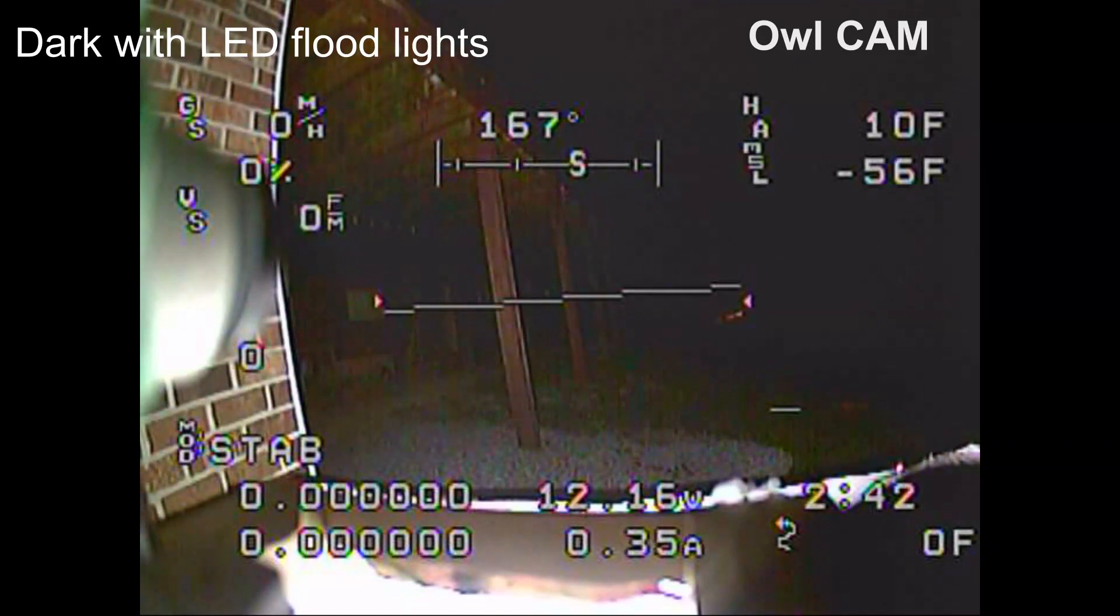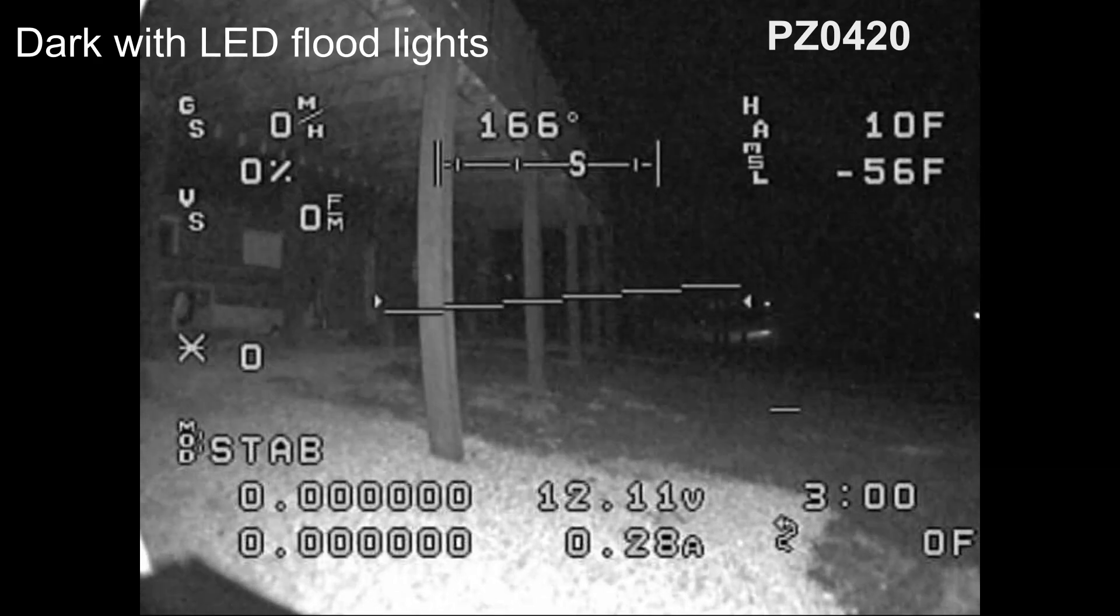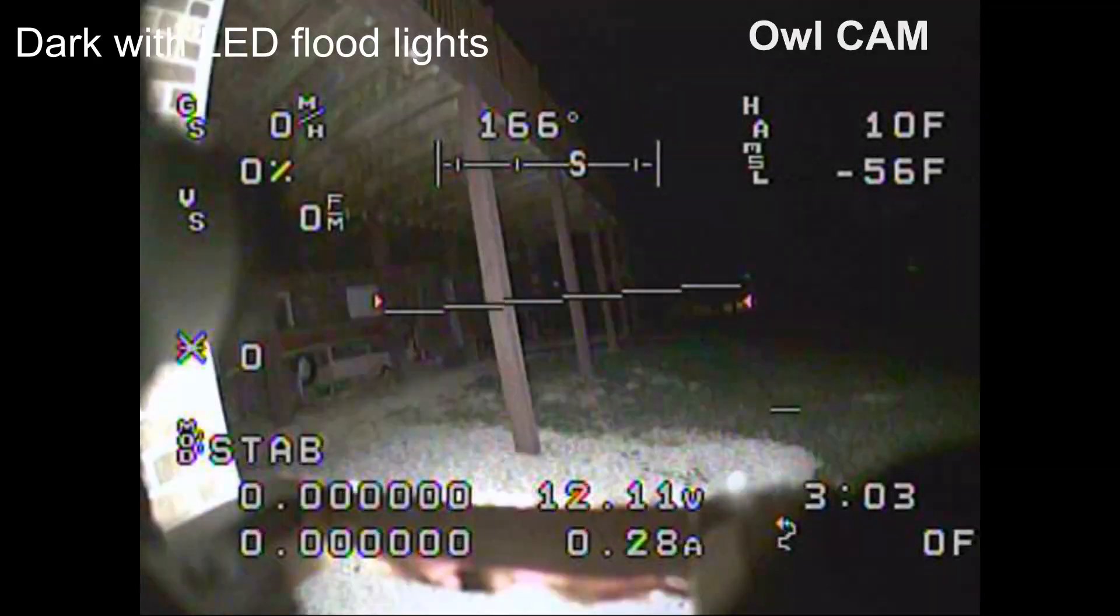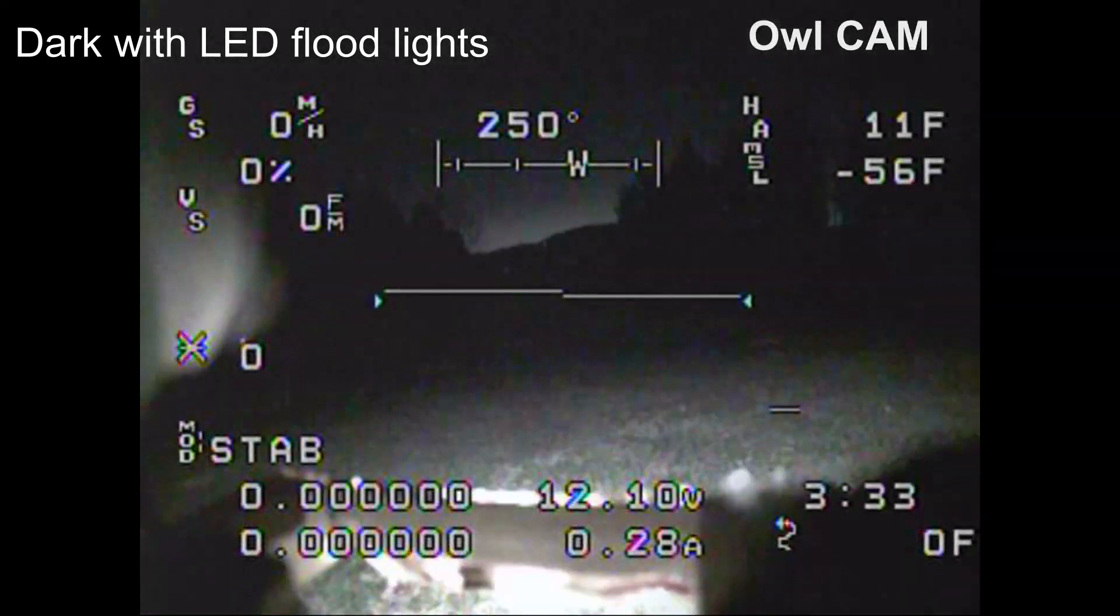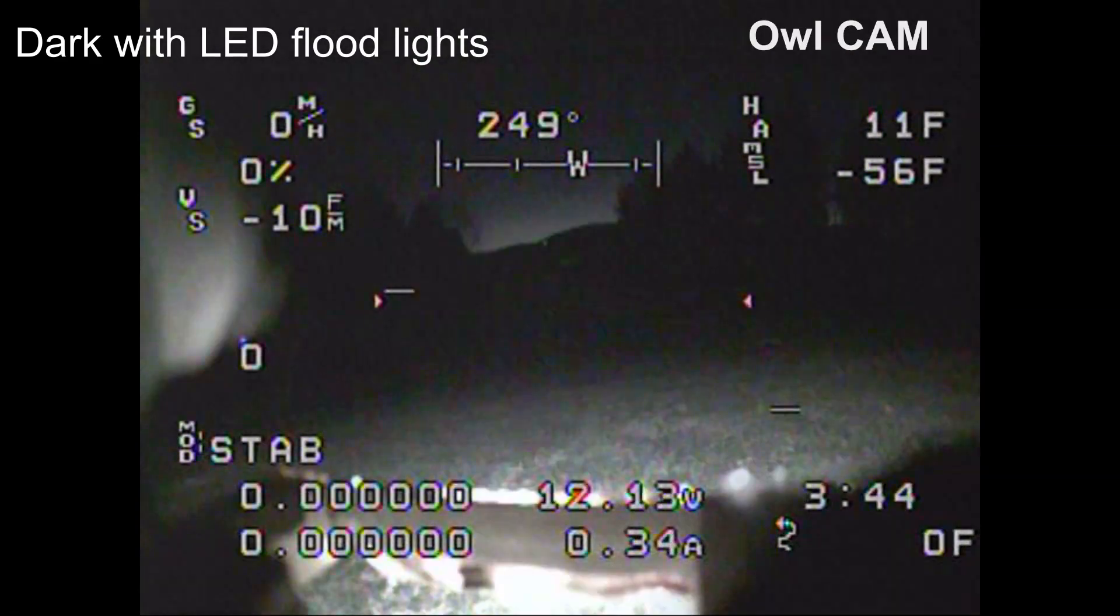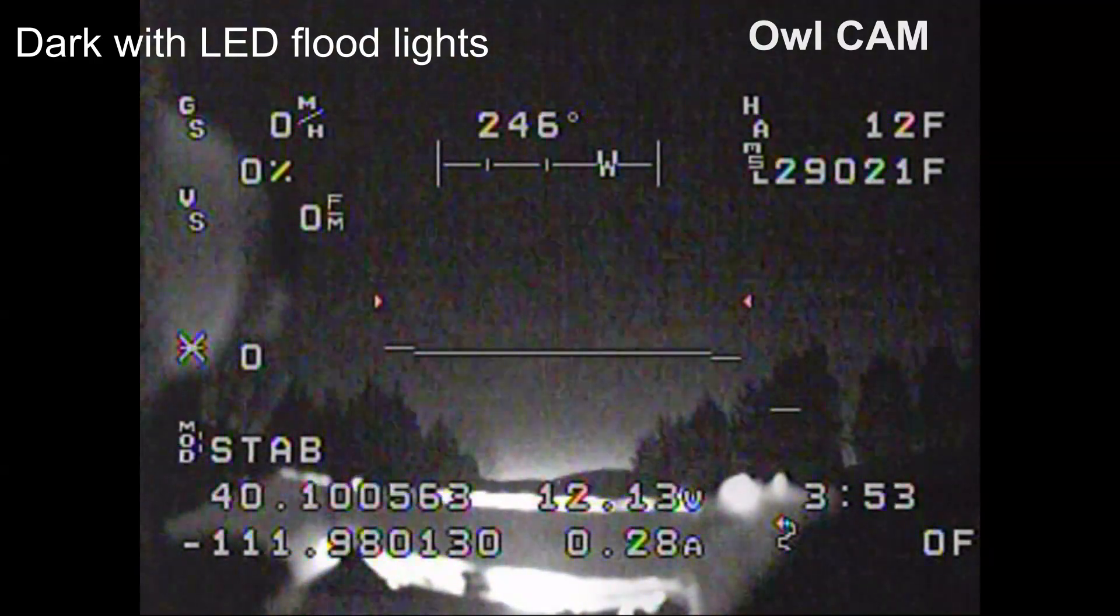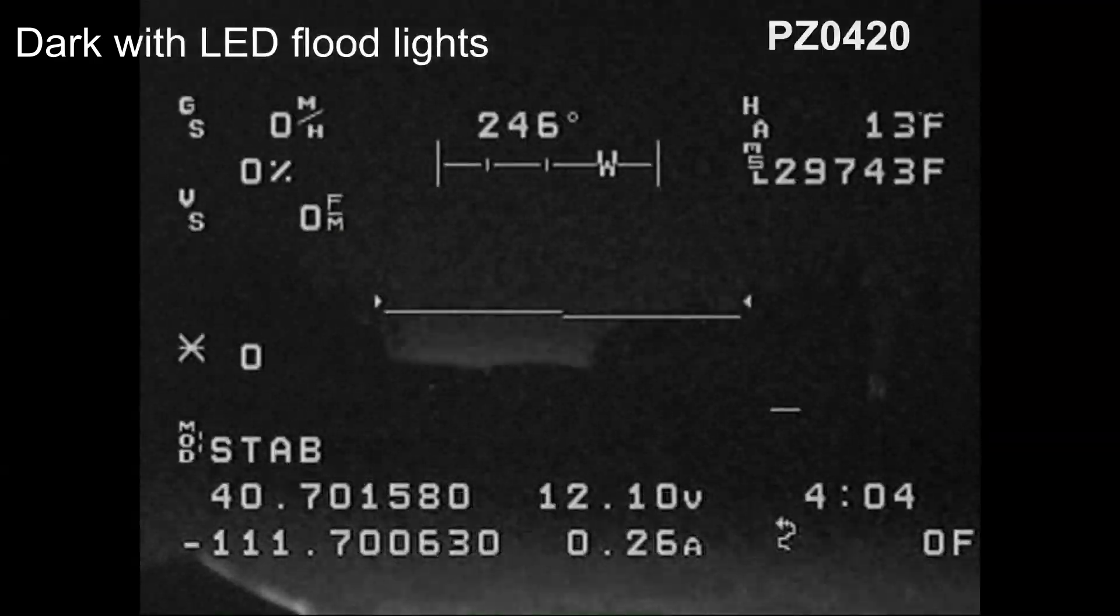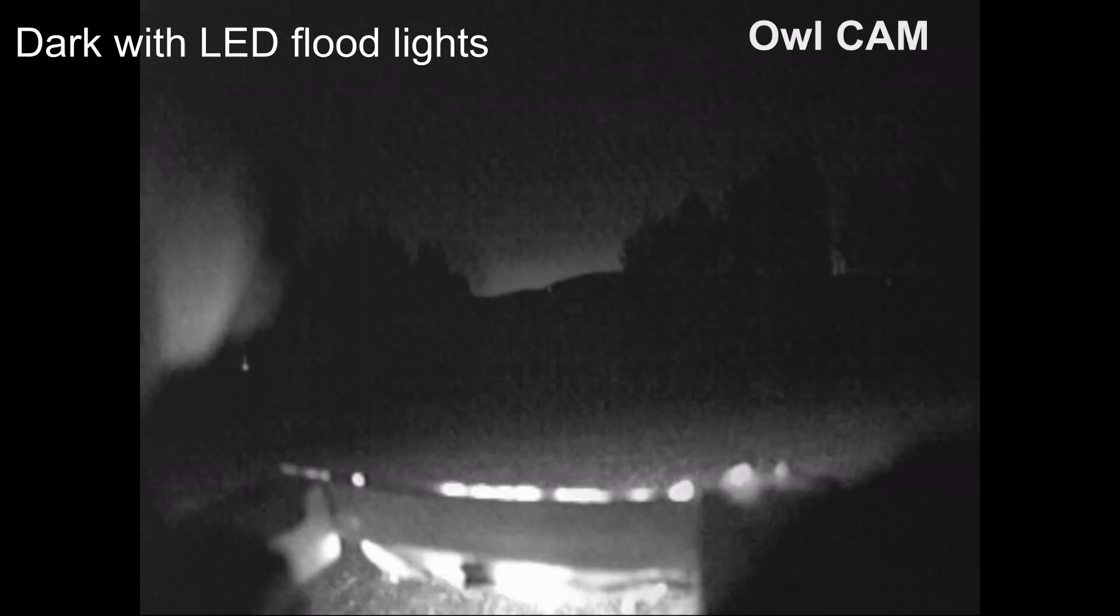This is with three LEDs on the front of the quad. The quadcopter has three three-watt LEDs, so that's only nine watts. But you can see the OWL can see further. For example, you can see off in the distance better with the OWL camera. I'm going to tilt the quad up. You can see how the lights shine out. With the OWL you can see way off in the distance out on the golf course. You can't with the PZ. The PZ just looks dark out there.